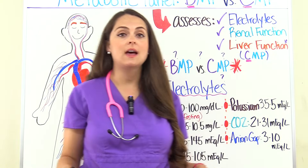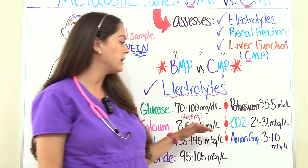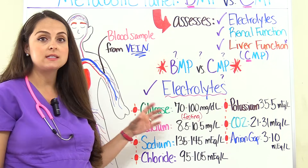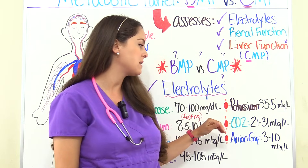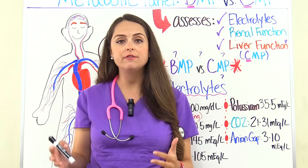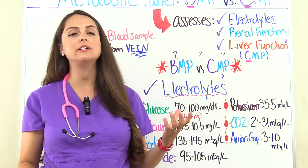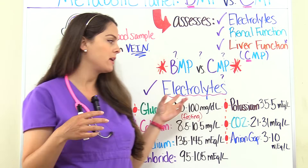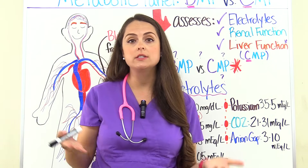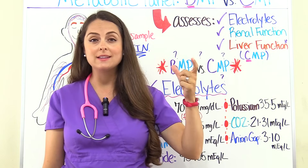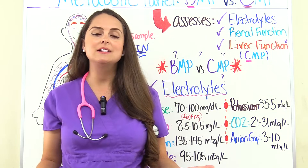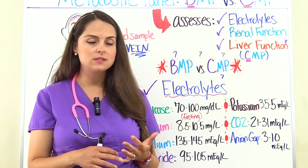Sometimes also assessed in the electrolyte part of the metabolic panel is what's called an anion gap. This is calculated by looking at certain electrolytes — sodium, chloride, sometimes potassium, and bicarbonate from the CO2. It looks at the gap, or difference, between positively and negatively charged electrolytes in the panel. A normal gap is about 3 to 10 milliequivalents per liter. A really high gap means we probably have metabolic acidosis going on. Conditions that cause this include DKA (diabetic ketoacidosis) and renal failure.